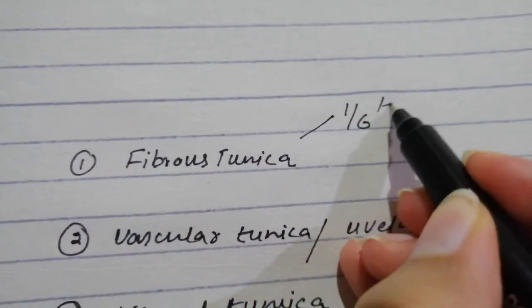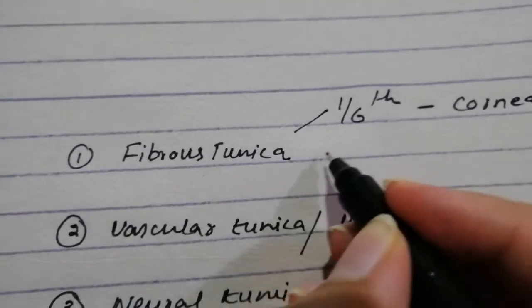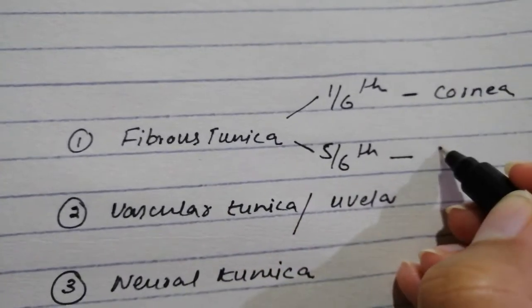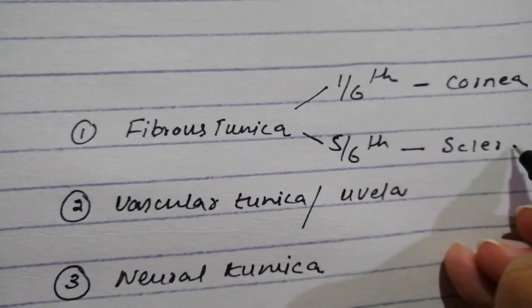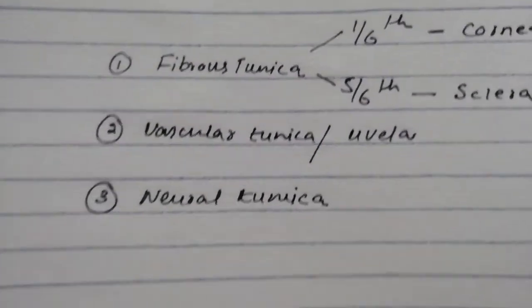One-sixth, the anterior one-sixth of the fibrous tunica is the cornea, and the posterior part, five-sixths, is the sclera. So some basics about the cornea and the sclera, starting with the cornea.